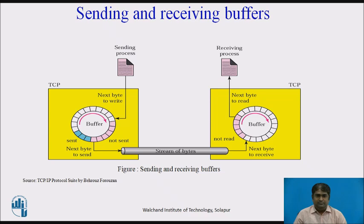The figure shows the movement of data in one direction. At the sender, the buffer has three types of chambers. The white section contains empty chambers that can be filled by the sending process. The colored area holds bytes that have been sent but not yet acknowledged — the TCP sender keeps these bytes until it receives an acknowledgement. The shaded area contains bytes to be sent by the sending TCP. TCP may send only part of this shaded section, due to slowness of the receiving process or congestion in the network. After bytes in the colored chambers are acknowledged, the chambers are recycled and available for use by the sending process.